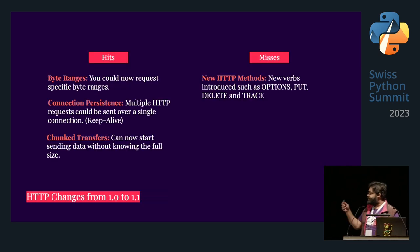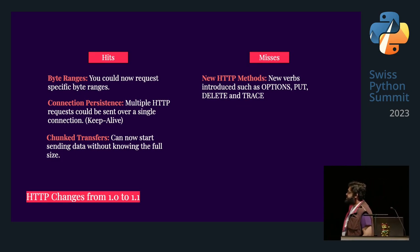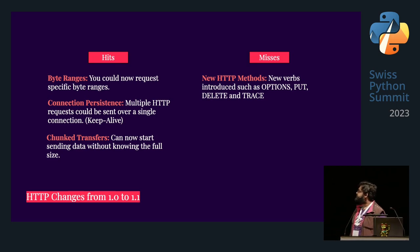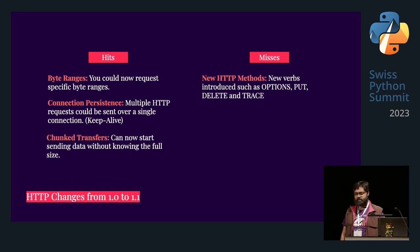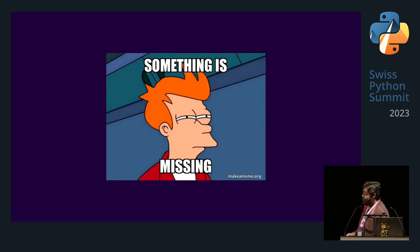From HTTP 1.0 to 1.1, we added byte ranges, connection persistence, chunk transfers, and also a new bunch of keywords like OPTIONS, PUT, DELETE and TRACE — most of which are not really used. Let's be honest, nobody uses OPTIONS, right? Actually, people use OPTIONS. Okay, that guy uses OPTIONS. But something is missing — we're just talking about text. What we want is dynamic content. We want to be able to tell a website something and get a response; we want to feel like it's human.